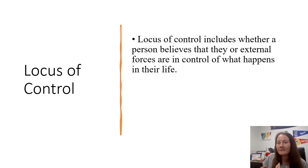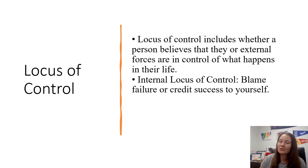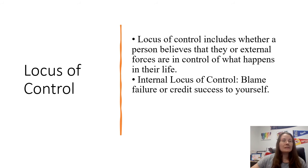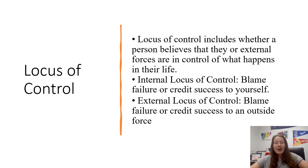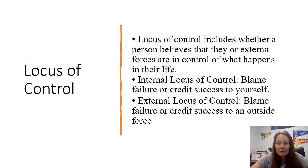We have two major types of locus of control, and you may have a mix of both. An internal locus of control is where you blame yourself for failure or credit yourself for successes — for example, 'I studied really hard so I got a great grade,' or 'I didn't train enough so I lost my race.' An external locus of control is where you blame others for failure or credit others for your successes — 'We lost because the referees were bad,' or 'I got a great score — it was just luck.'